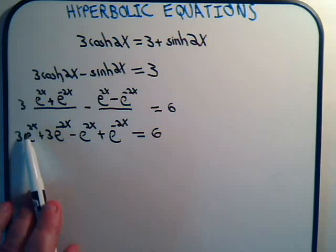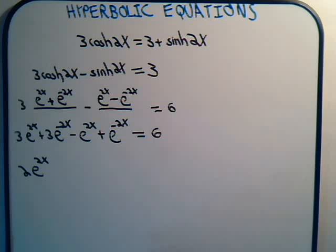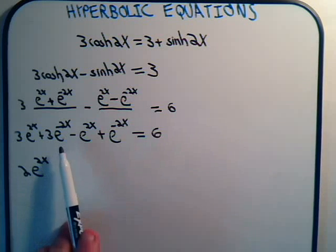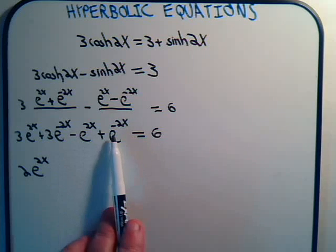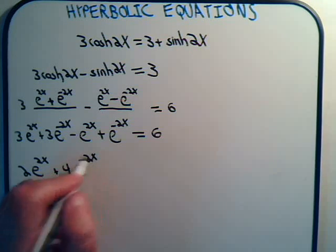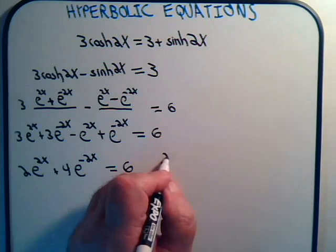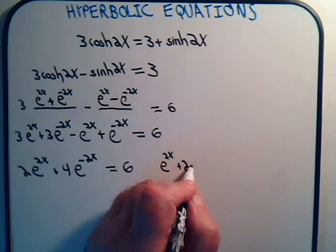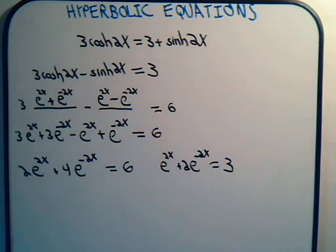Combining like terms: 3e^(2x) minus e^(2x) gives 2e^(2x). For the e^(-2x) terms, 3e^(-2x) plus e^(-2x) gives 4e^(-2x). So we have 2e^(2x) plus 4e^(-2x) equals 6. Dividing each side by 2, we get e^(2x) plus 2e^(-2x) equals 3.